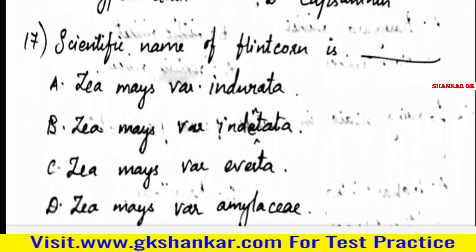Seventeenth question: Scientific name of flint corn is — A. Zea mays indurata, B. Zea mays indentata, C. Zea mays everta, D. Zea mays amylacea. Answer: A. Zea mays indurata.